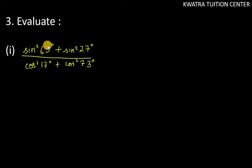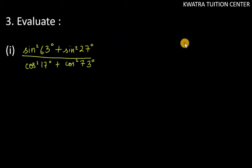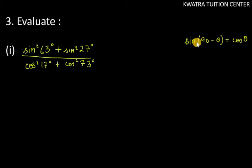You can see here that it is 63 degree and 27 degree. So what is 63 and 27? They form a complementary pair. So you have to use complementary angles. You will know that if we have sin(90 minus theta), it equals cos theta. So if you have sin square(90 minus theta), then your answer is cos square theta.